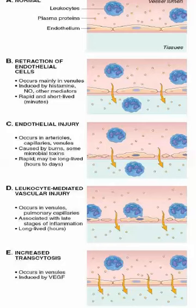We can look at this figure, which shows the principal mechanisms of increased vascular permeability and inflammation, and recognize features and the underlying causes, such as nitric oxide and VEGF — vascular endothelial growth factor. Looking at the normal state, we can see the endothelium and the leukocytes passing gently through the lumen.